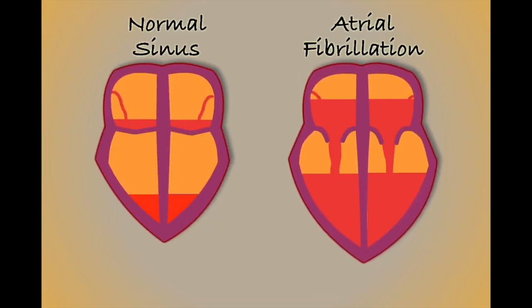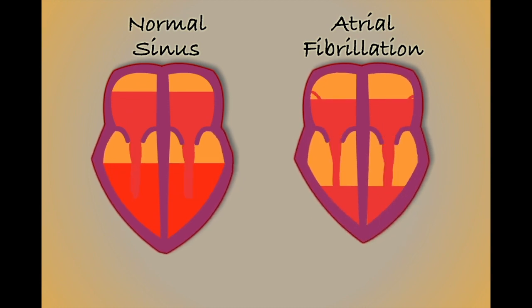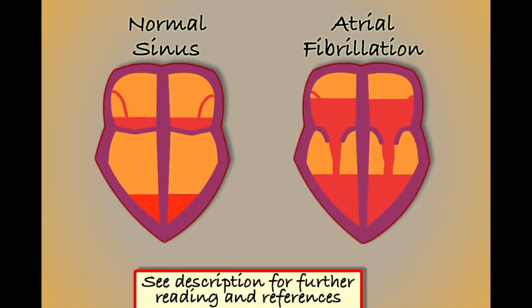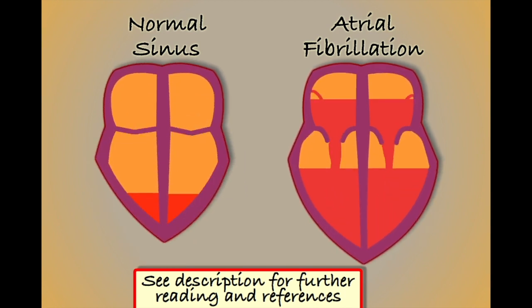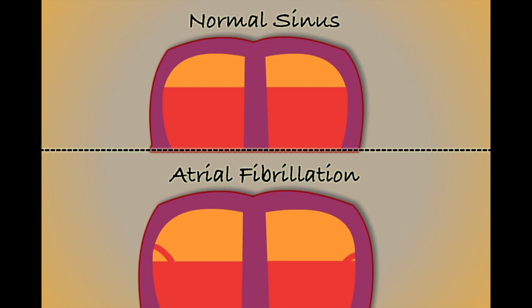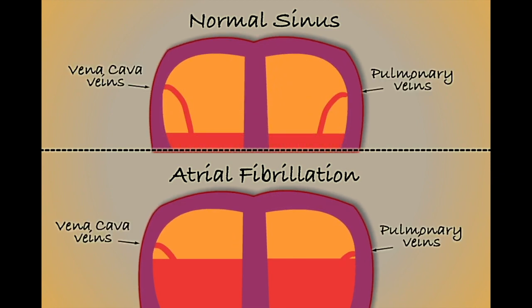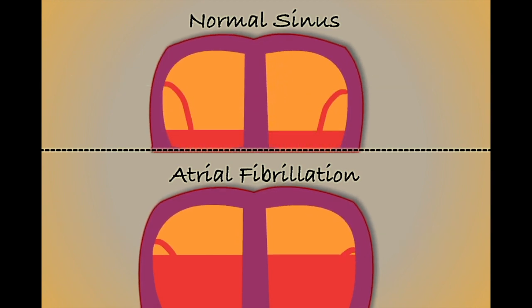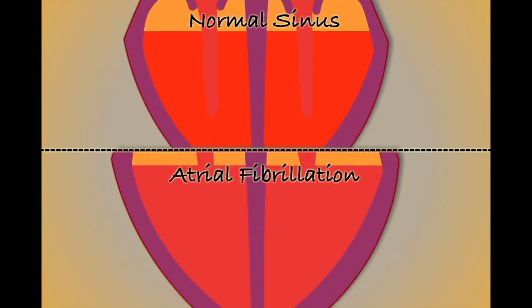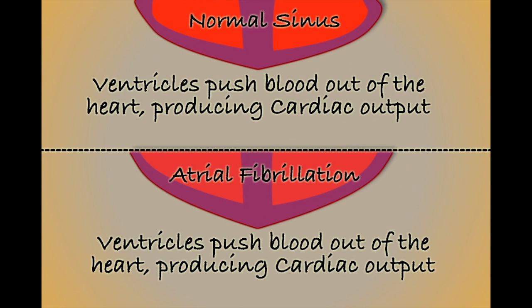On the screen we have two animations: one representing a heart in atrial fibrillation, the other showing a heart in sinus rhythm for comparison. In both, the atria are filling from the vena cava and pulmonary veins, and blood flows down through the tricuspid and mitral valves into the ventricles. The ventricles then contract, squeezing blood from the heart to produce cardiac output.